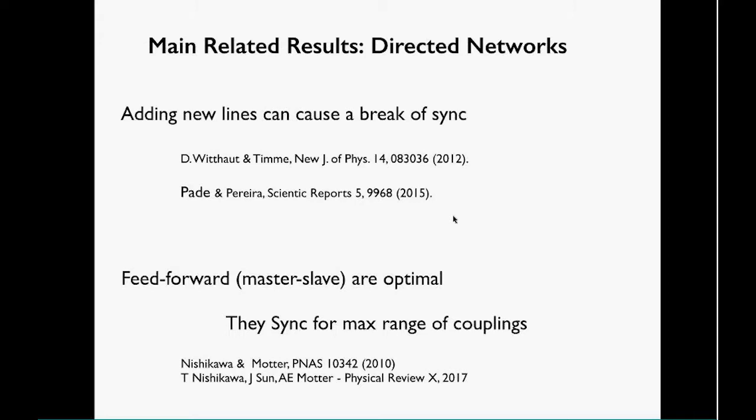For directed networks, when this matrix is not symmetric, the situation seems to be a bit more interesting. For example, if you add a single link, you can break synchronization. This was observed in the context of a second-order Kuramoto model and also in this type of model.